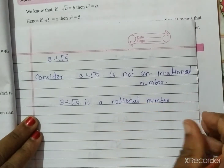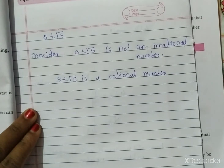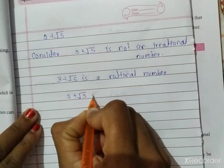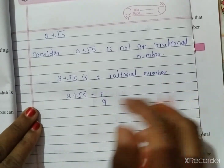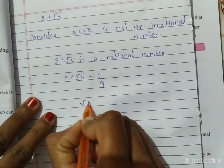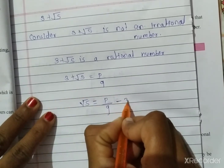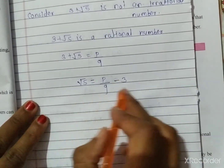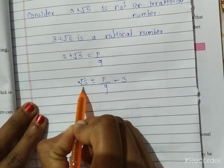Since 3 + √5 is a rational number, we write 3 + √5 = p/q. From this, √5 = p/q − 3. So √5 equals p/q minus 3, which would make √5 a rational number on the left-hand side.